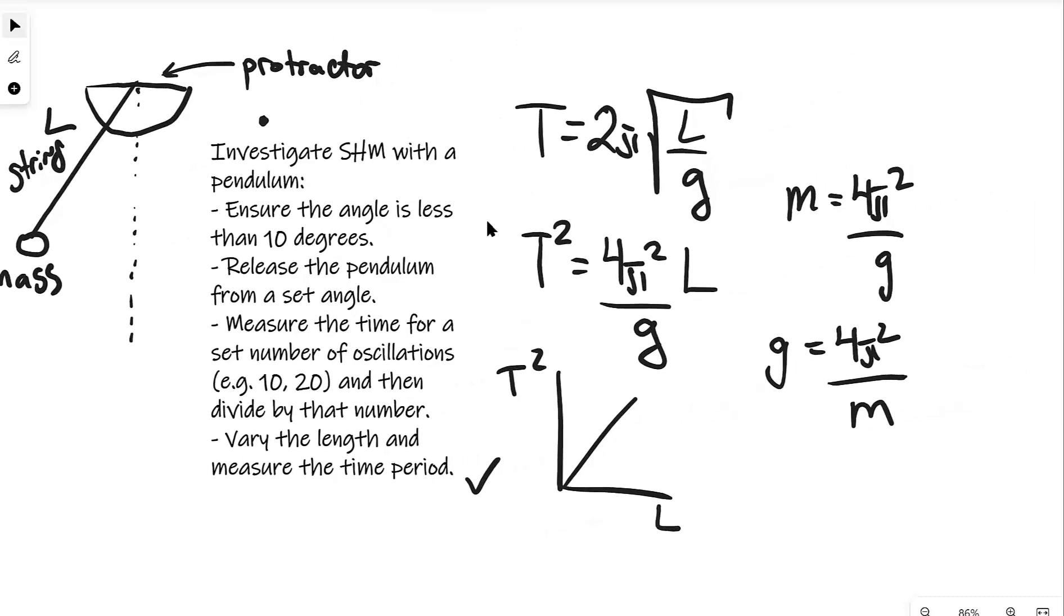What we're going to do is vary the length and then measure the time period. There's an equation which is not actually on the spec: T = 2π√(L/g). The previous equation for the spring was also not on the spec but they would typically be given if that comes up in an exam question. So we're going to plot a graph of T² against L in order to ensure a linear relationship and our gradient will be equal to 4π²/g. Then we could use that to determine the gravitational acceleration and that will be 4π² divided by the gradient of the graph.